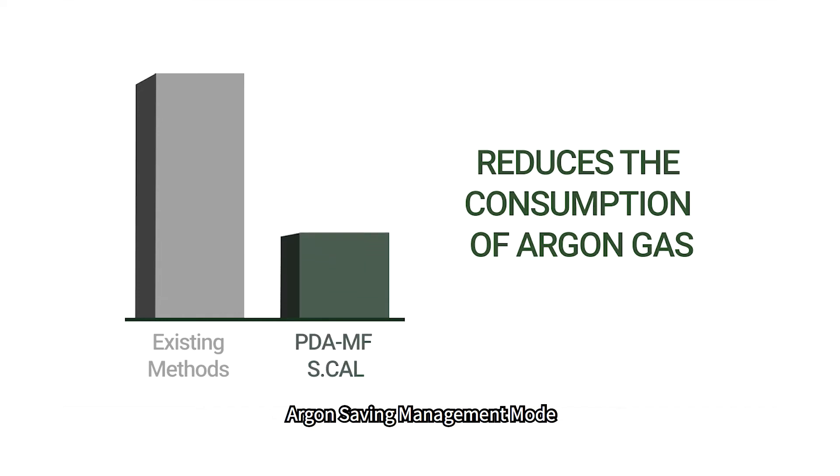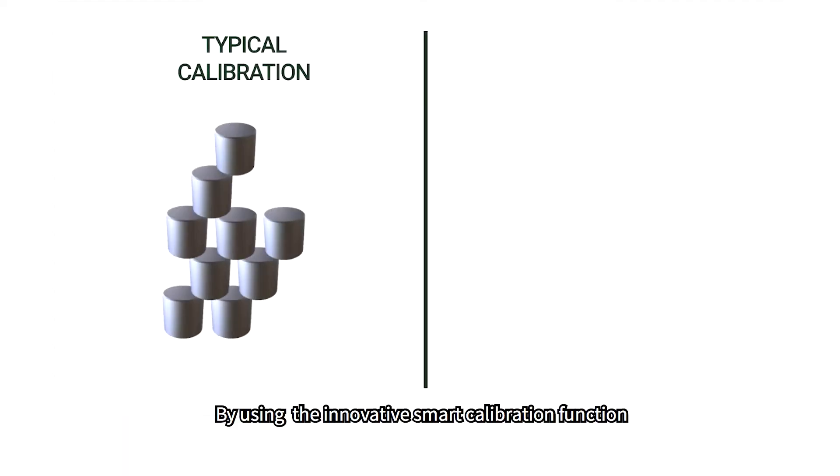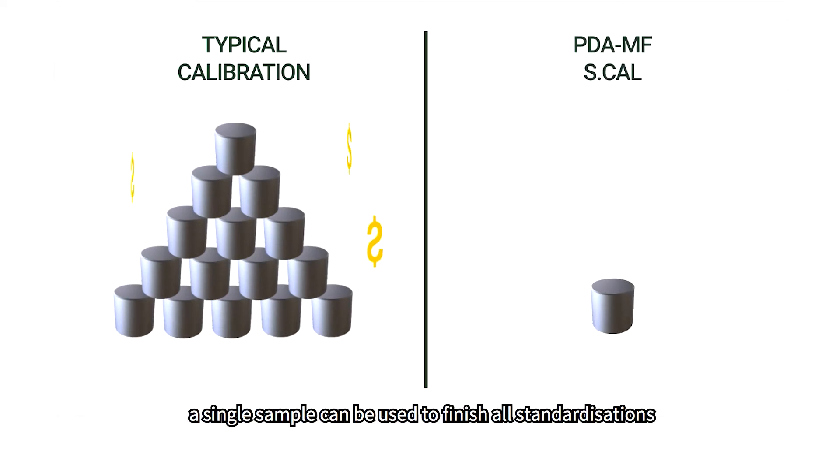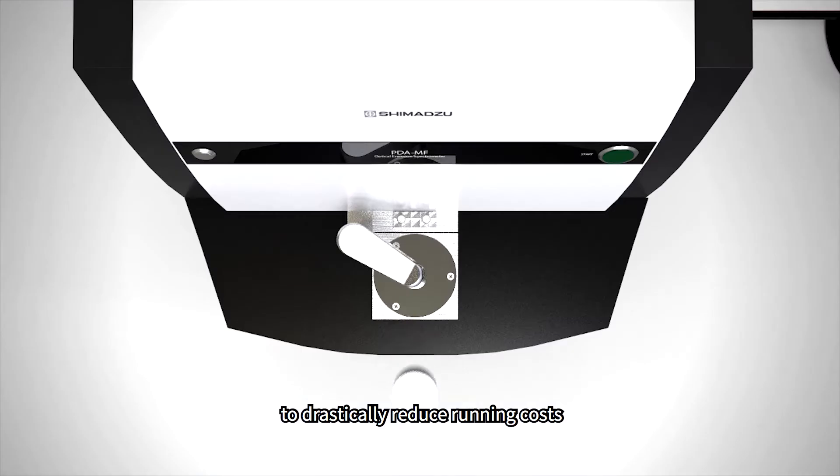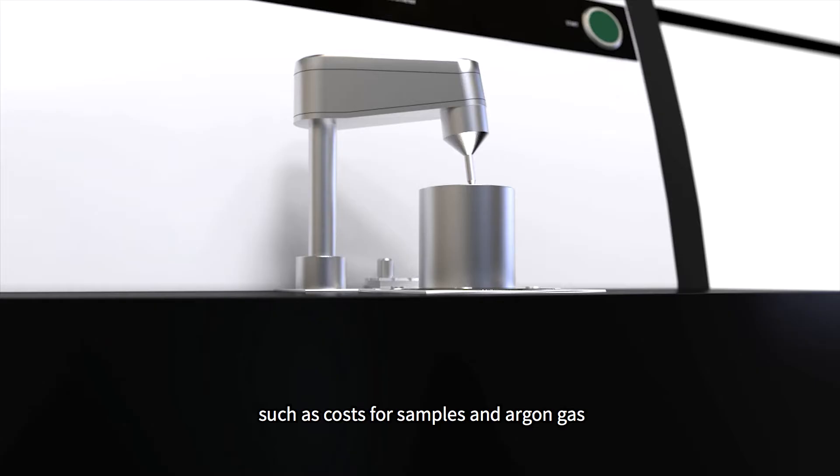With the new computer controlled argon saving management mode, the instrument can switch automatically between the analysis, standby and idle states to reduce the consumption of argon gas to a minimum. By using the innovative smart calibration function, a single sample can be used to finish all standardizations to drastically reduce running costs, such as costs for samples and argon gas.